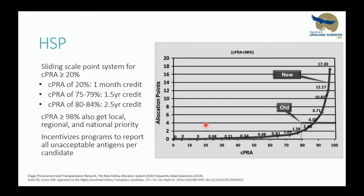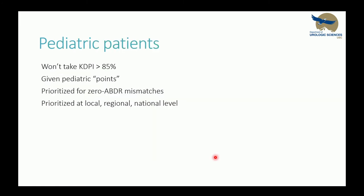For HSP in the US, they use a sliding scale point system for any CPRA of 20% or greater. This differs from the old system which gave a flat points bump at CPRA over 80%. Now any CPRA of 20% begins earning extra points, and if CPRA is 98% or greater, the patient receives local, regional, and national priority. This also incentivizes programs to report all unacceptable antigens per candidate to raise their CPRA. For pediatrics in the US, they will not accept any KDPI over 85%, are given additional points, prioritized for perfect HLA matches, and prioritized at local, regional, and national levels.